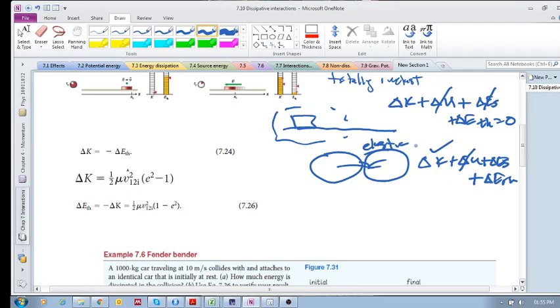In elastic collisions as well, unless there's an explosion of some sort, we won't really consider any change in source energy. So this is why we get this for a collision.